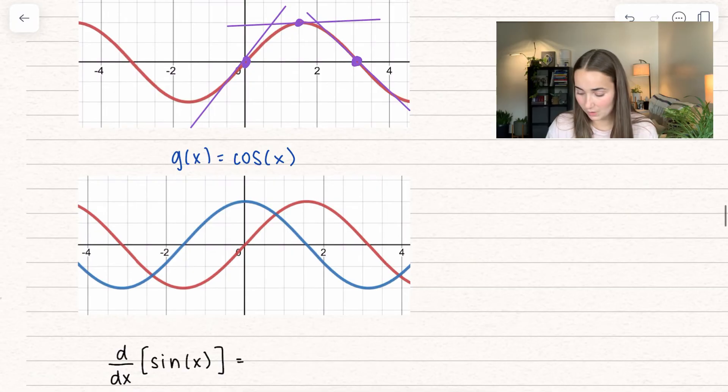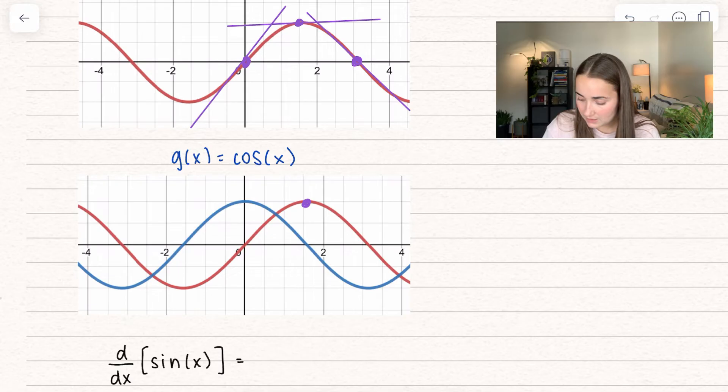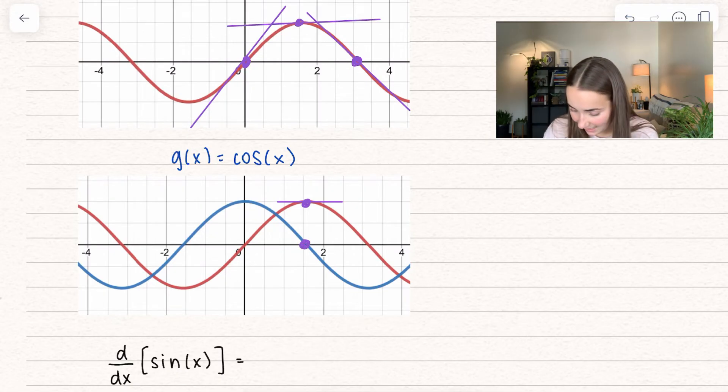I have cosine of x with sine of x on this next graph. Cosine of x defines the slope of sine of x at all points. Notice right here, we talked about how the slope of the tangent line is neither positive or negative. It's just 0. That means our function, cosine of x, is actually 0. And it does that at every single point.